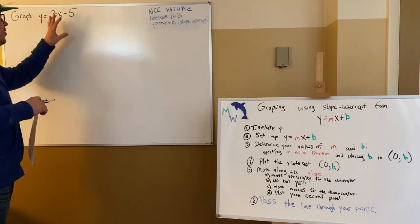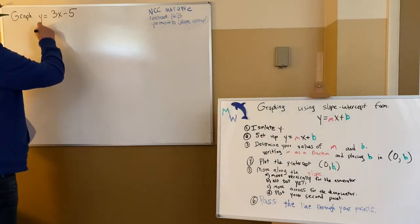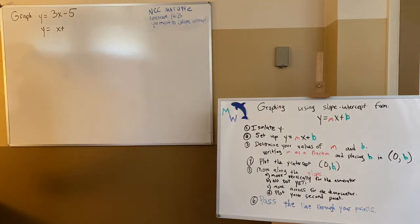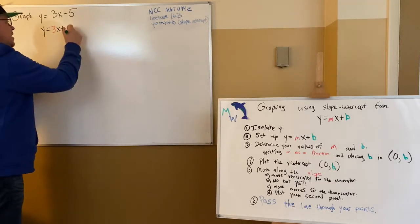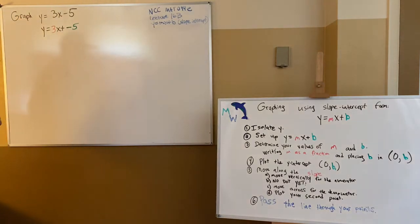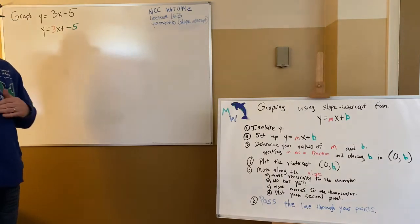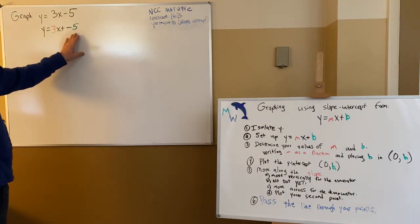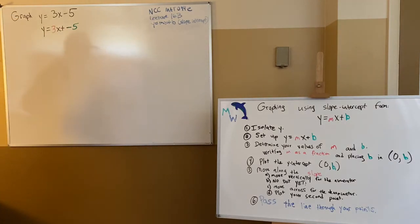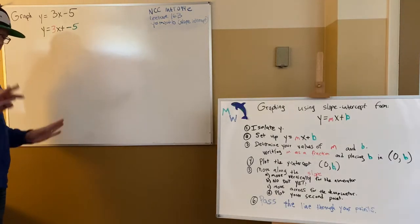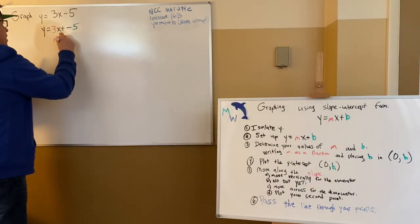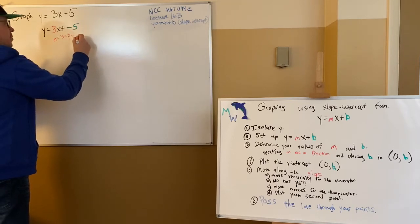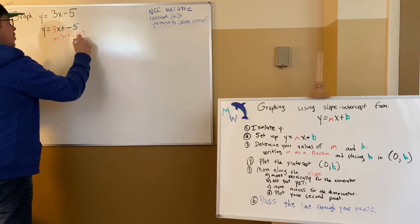y equals three x minus five. Slope is best as a fraction, so set up y equals x plus. I see three and then plus, and behind it the dash and the five — so b is negative five. It's always plus, sometimes a negative number. m equals three, which is three over one. Because it's positive three, go up three and then to the right one. You need that one — you're not just going to go up three and say that's it.